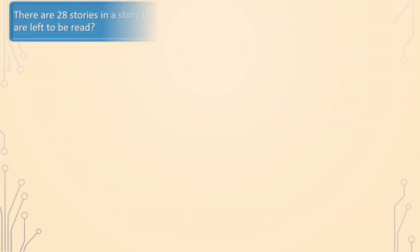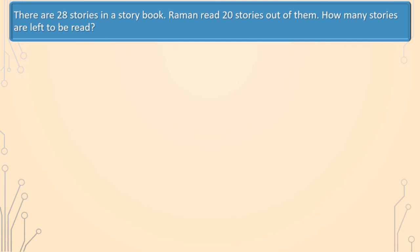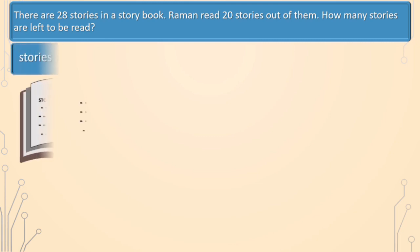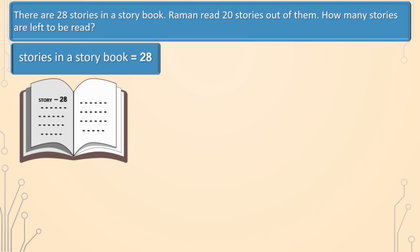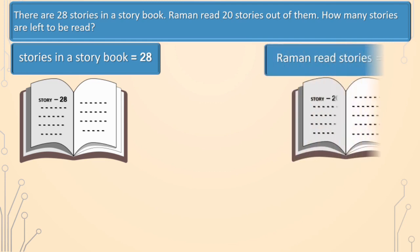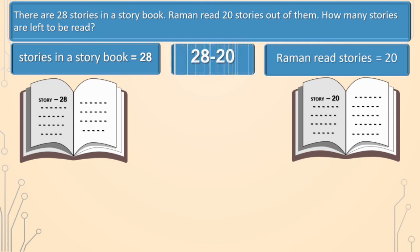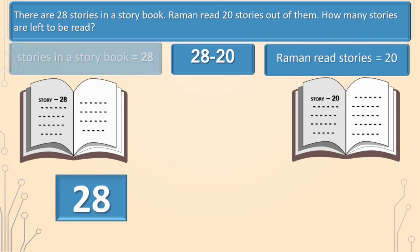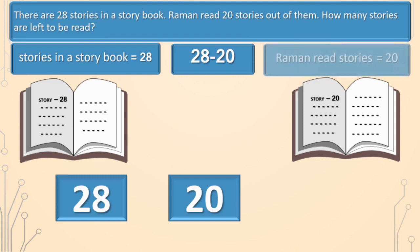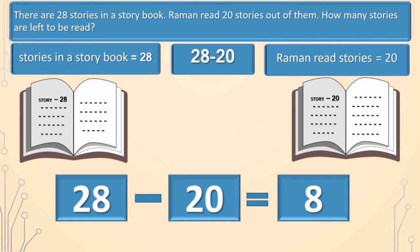There are 28 stories in a storybook. Raman read 20 stories out of them. How many stories are left to be read? Stories in a storybook is equal to 28. Raman read stories is equal to 20. We will find the number of stories left to be read — we will subtract 20 from 28. Stories in a storybook is equal to 28, Raman read stories is equal to 20. 28 minus 20 is equal to 8. So, 8 stories are left to be read by Raman.